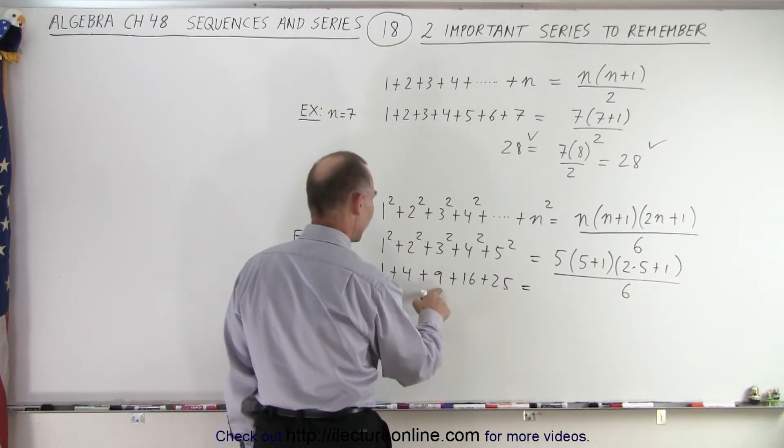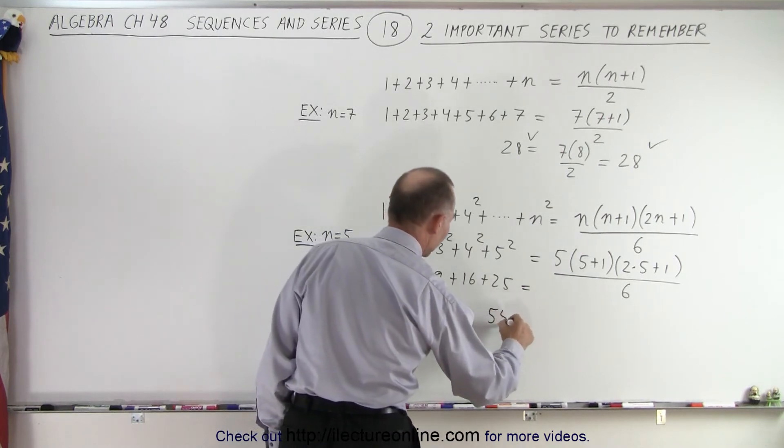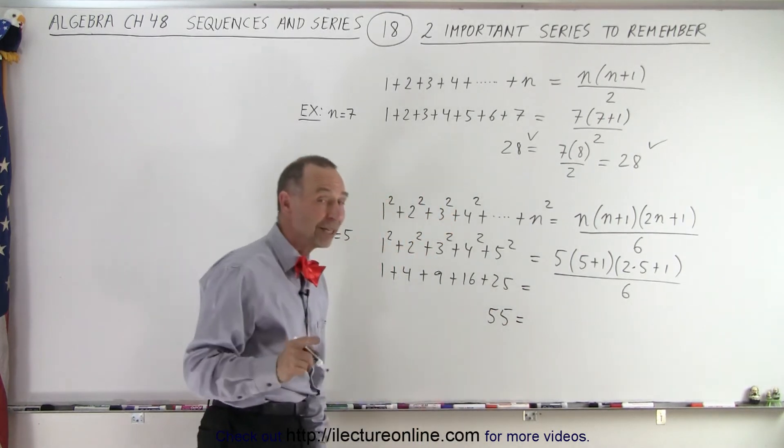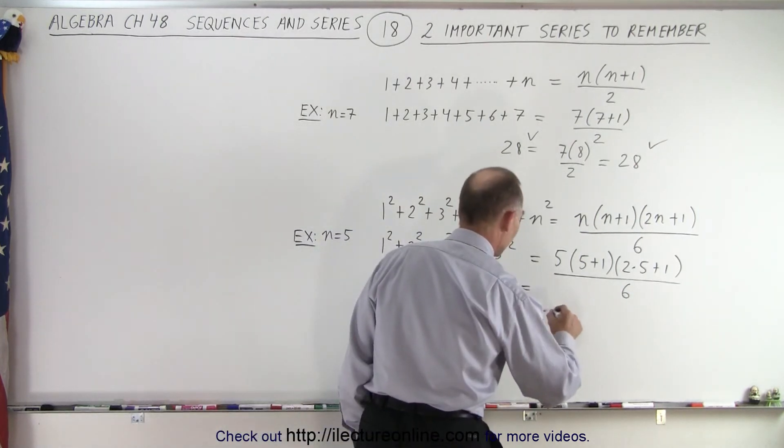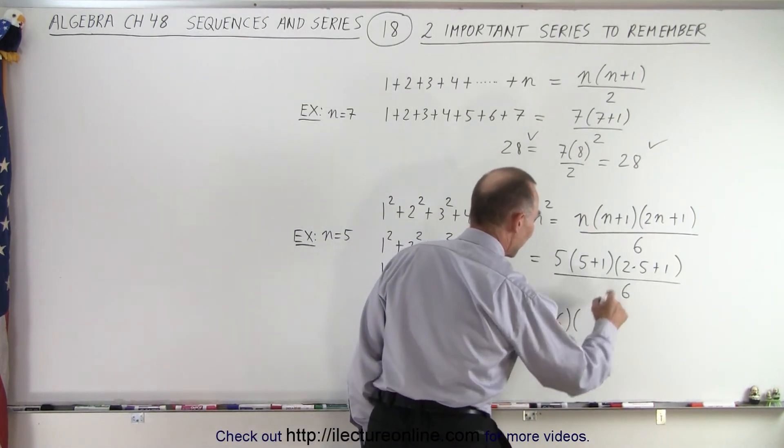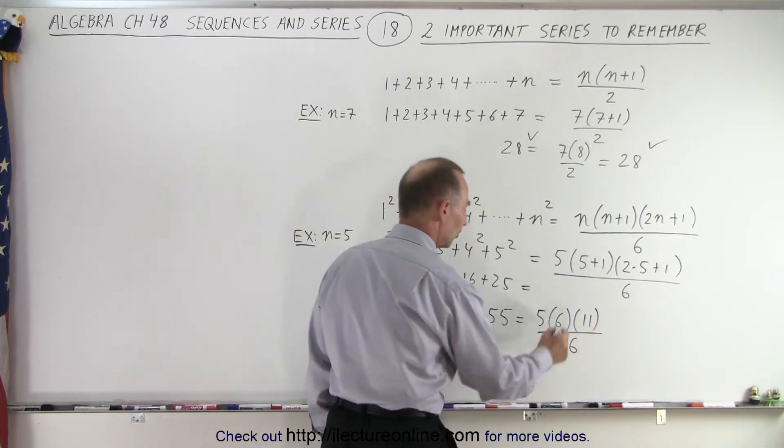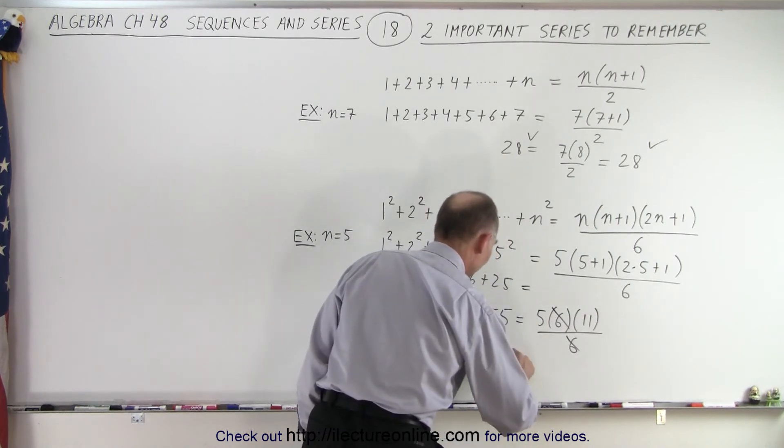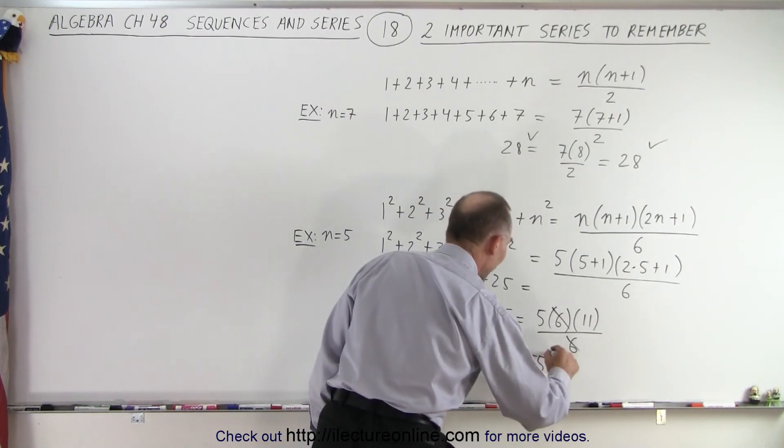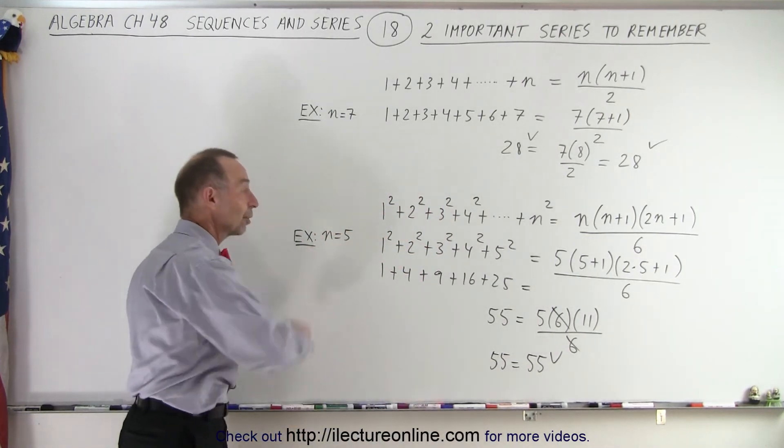And so now notice that's 10, that's 30, that's 55 on the left side. So let's see if we get the same thing on the right side when we work that out. So this would be equal to 5 times 6 times 10 plus 1, which is 11, divided by 6. Notice that the 6 cancels out. 5 times 11 is 55, so 55 does indeed equal 55, which means that at least for n equals 5 it works.